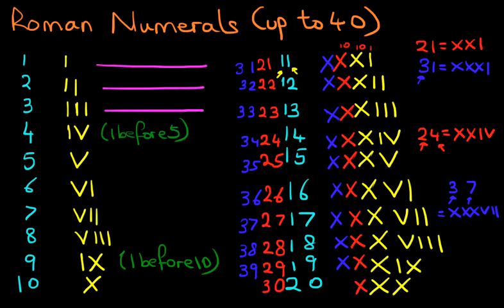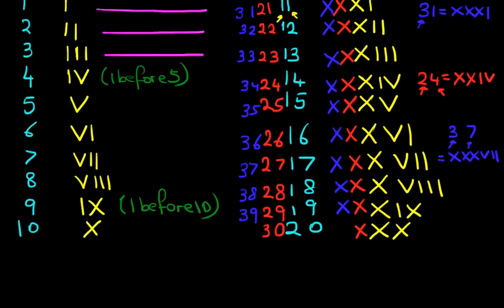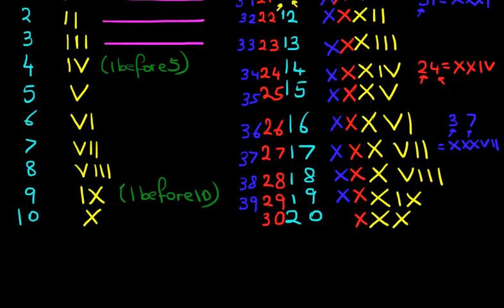Now when we get to this stage, I'm just going to scroll down and we're going to write down number 40. Now 40 is, if you're thinking we have to write down X, X, X, X, X, because that makes it 40, there are four 10s, that is not correct.